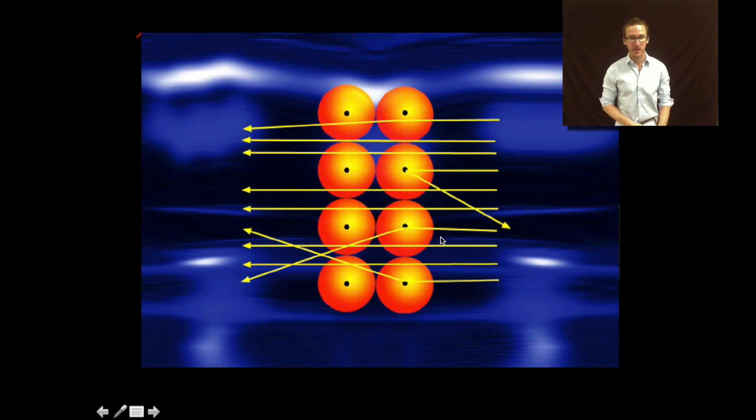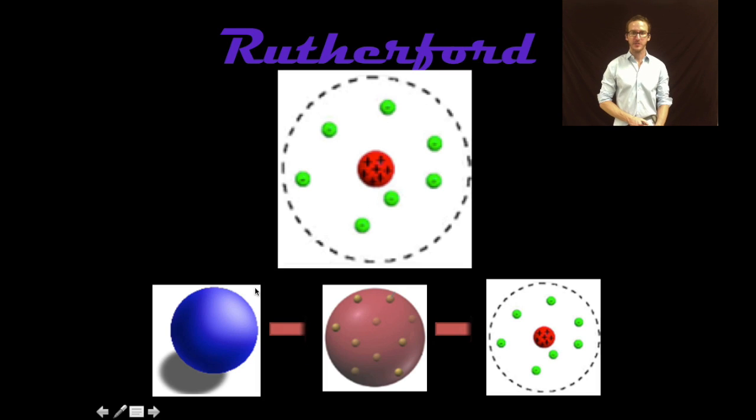And so if you imagine a cross section of that sheet of gold foil, only a couple of atoms thick, the best way to understand the structure of the atom, based on the results of his experiment, was that the majority of the atom is actually just nothingness, empty space, allowing those alpha particles to move through. And that the mass of the atom is actually concentrated into that nucleus, a very small region of space, which is why only a few of the alpha particles were deflected. Again, experimentation, revising our understanding.